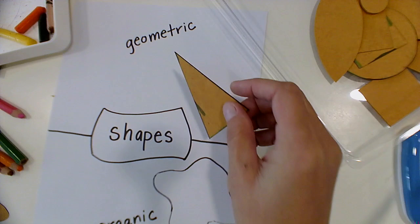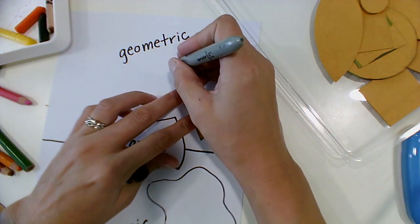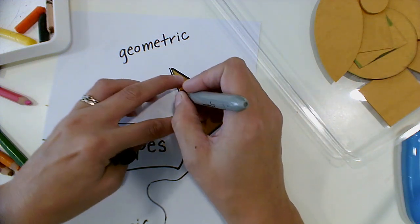The next one I pick up is a triangle, which is a geometric shape. So I will put that on the top where my geometric shapes are.